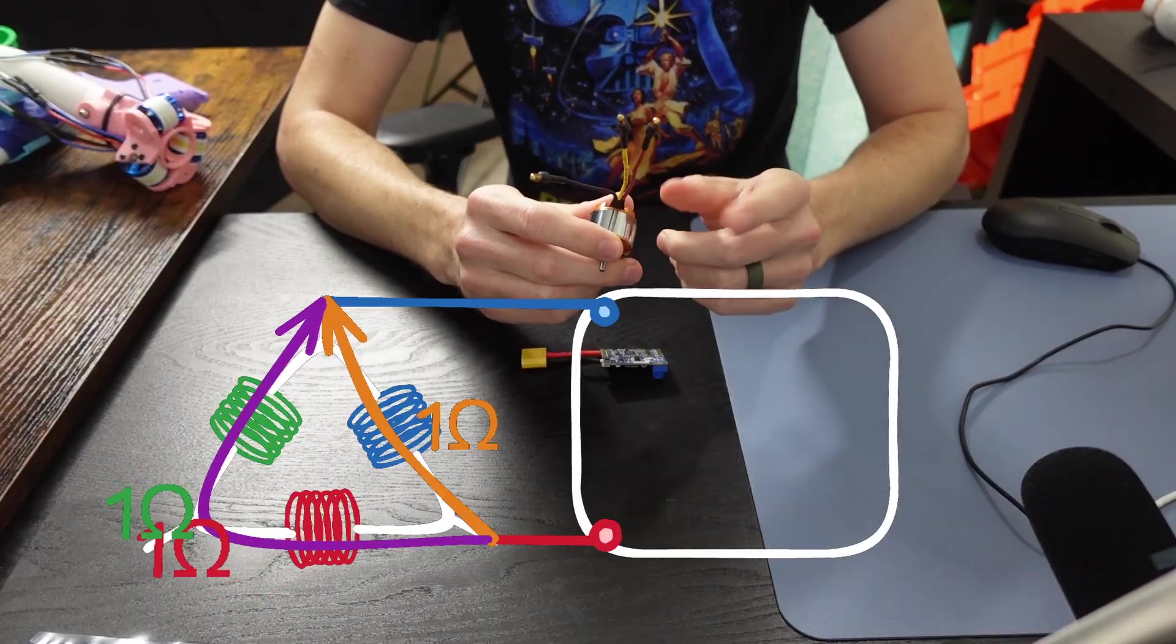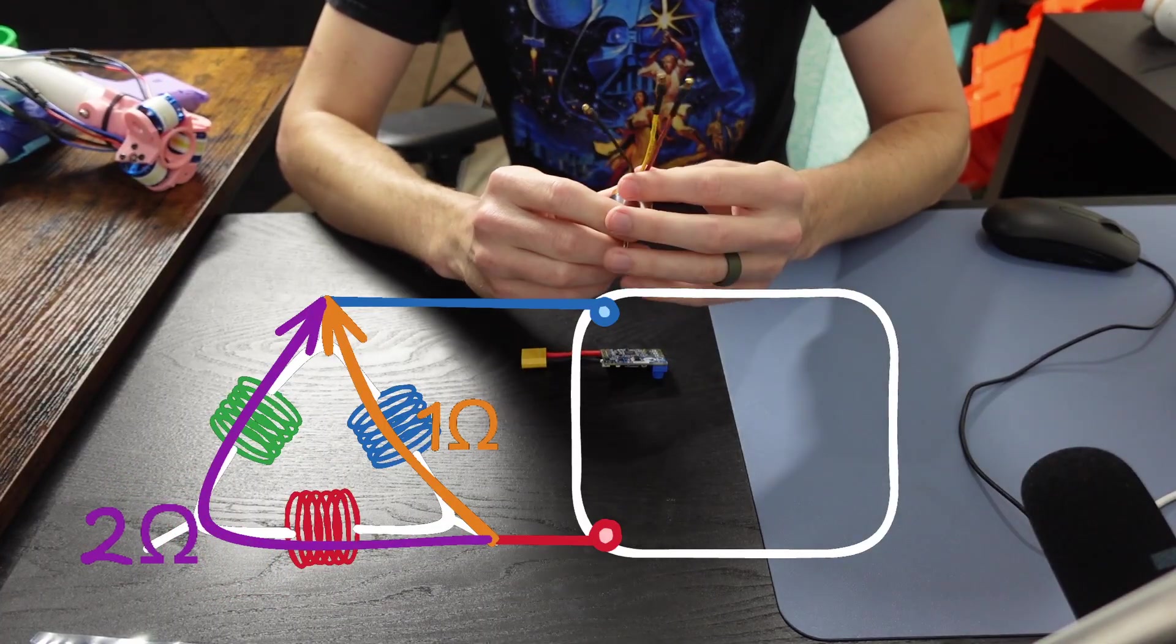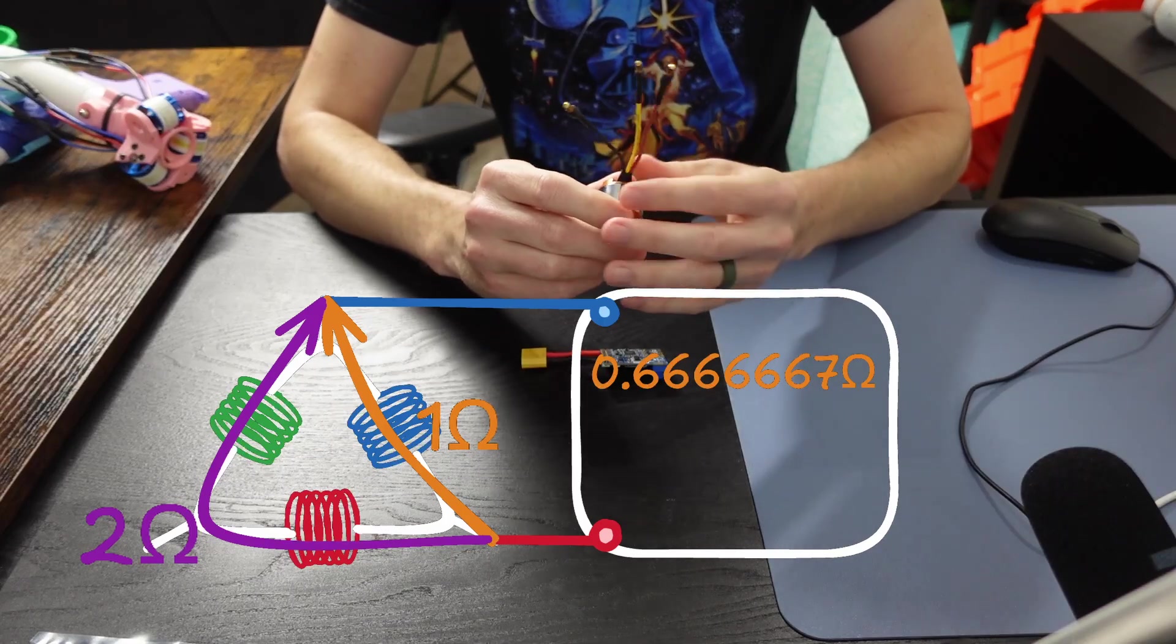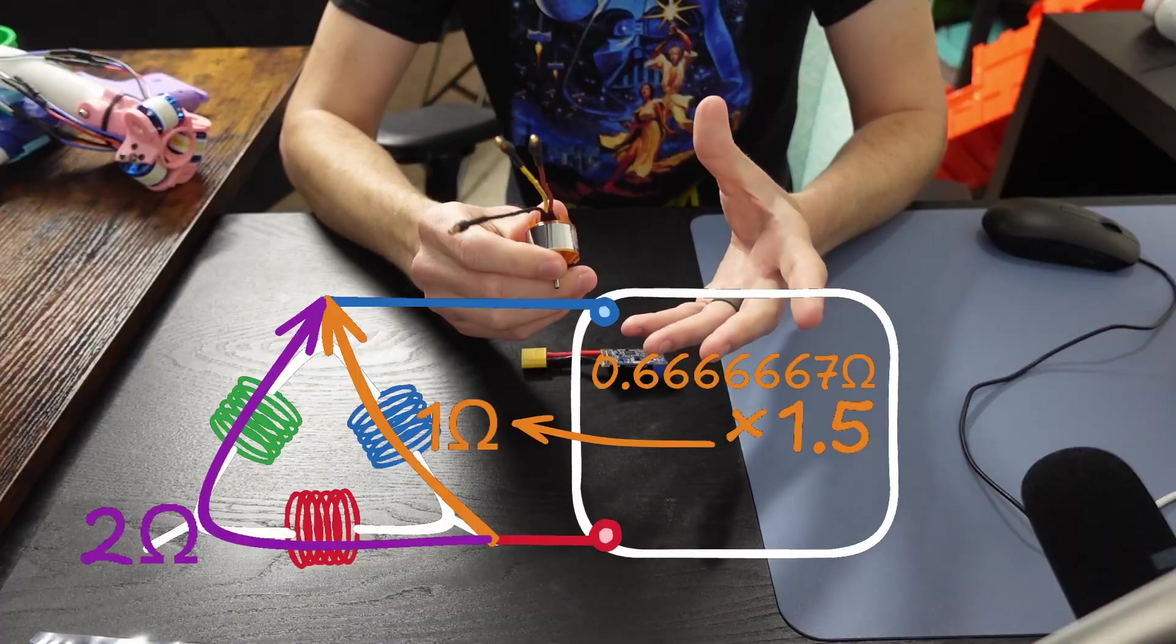And because of that, it should have two times the resistance. This results in a measurement that is two-thirds of a single phase resistance. So multiplying this by 1.5 will give us the value we were trying to measure.